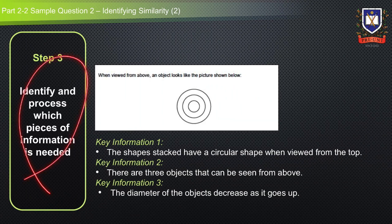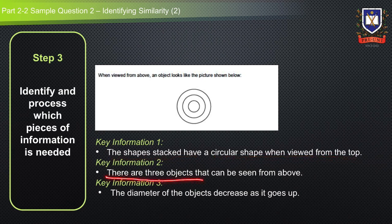Step three is to identify and process which pieces of information are needed. From this question, there are three key pieces of information: first, the shapes stacked have a circular shape when viewed from the top; second, there are three objects that can be seen from above; and third, the diameter of the objects decreases as it goes up.